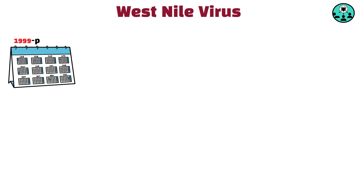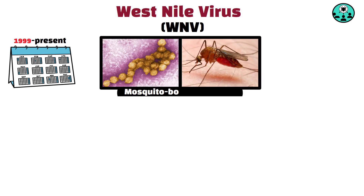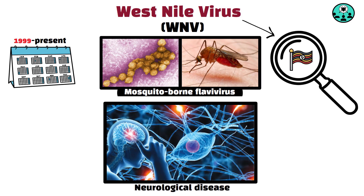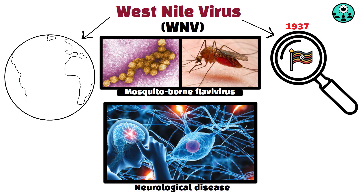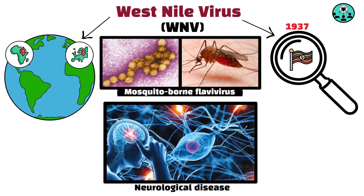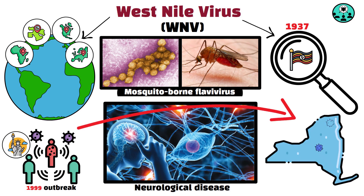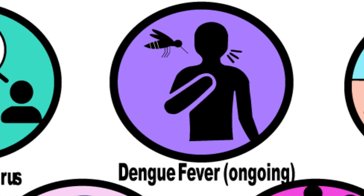West Nile virus, 1999. West Nile virus, WNV, is a mosquito-borne flavivirus that can cause severe neurological disease in humans. First identified in Uganda in 1937, WNV has spread globally, with outbreaks occurring in Africa, Europe, the Middle East, and North America. The 1999 outbreak in New York City marked the virus's introduction to the Western Hemisphere, leading to widespread outbreaks across the United States.